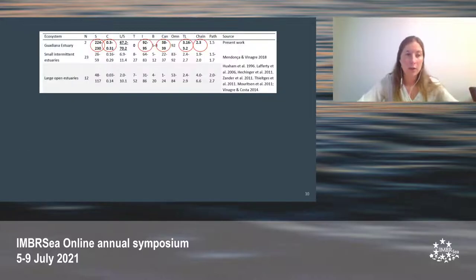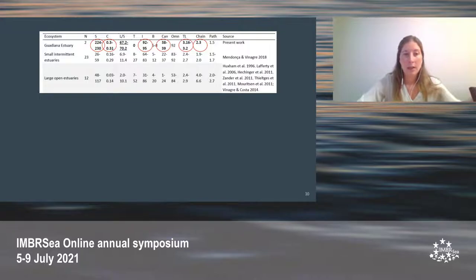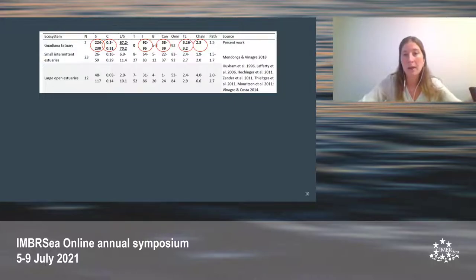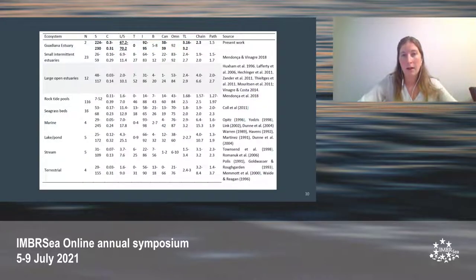When comparing properties with other estuaries, most properties slightly change. However, the properties are much more similar to small intermittent estuaries, which captures our attention and will be discussed later. When comparing with other ecosystems, such as lakes or even terrestrial ecosystems, the only property that stands out is links per species.